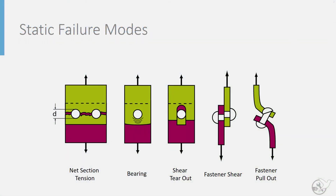In the previous videos we looked at the different failure modes under static loading for a mechanical fastener joint: net section tension, bearing, shear tearout, fastener shear, and fastener pullout. In this video we are going to develop simple analytical models for predicting the onset of these failure modes.